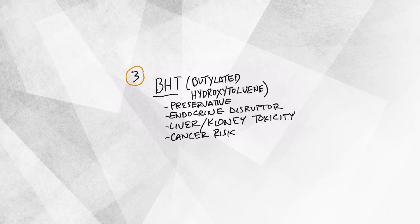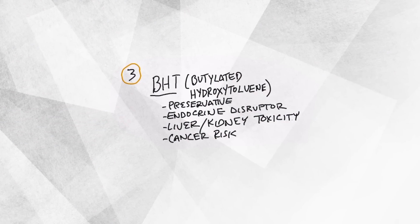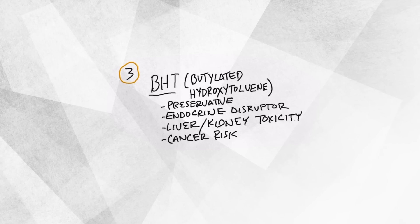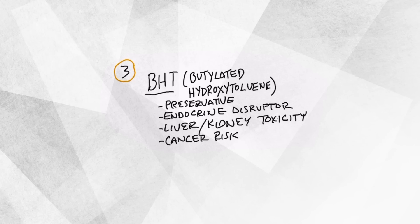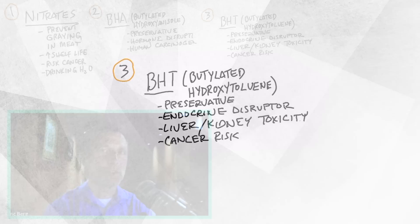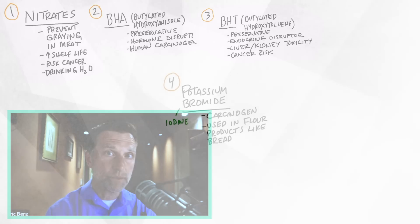There's another one called BHT, which is another preservative you see in a lot of different foods. It too is an endocrine disruptor. It messes with your kidney, your liver, and increases cancer risk. You really need to read the labels and watch for these chemicals, and there's a lot of them too.